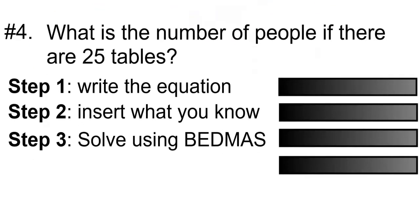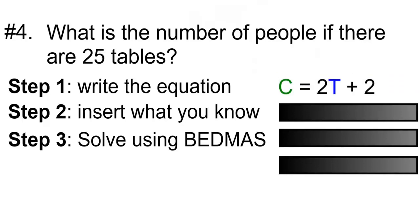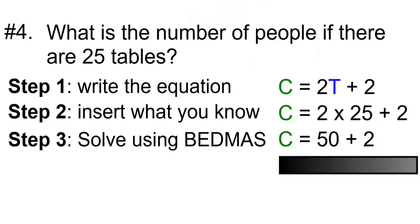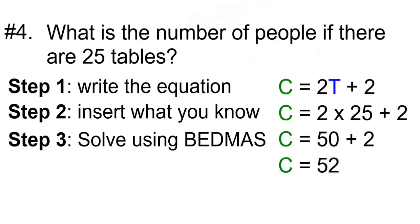What is the number of chairs if there are twenty-five tables? Step one: write the equation — C is equal to two times T plus two. Step two: insert what you know. We know there are twenty-five tables, so C is equal to two times twenty-five plus two. Two times twenty-five is fifty, and fifty plus two is fifty-two. So there will be fifty-two chairs for twenty-five tables.